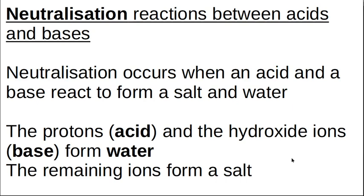We want to talk about neutralization reactions with acid-base titration. We often do titration with an acid and a base to work out an unknown concentration of one of the two — either the acid concentration or the base concentration. If you mix an acid and a base, you get a salt and water. The protons from the acid and the hydroxide ions from the base form water, and the remaining ions form a salt — a metal cation and the anion from the acid. A strong acid and a weak base give you an acidic salt.